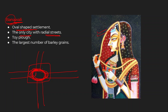Banwali is the only city with radial streets — just as in Part 1, Kalibangan was the only city where evidence of worship of the mother goddess was not found. This Bani Thani lady sat in her oval settlement at the center of the radial streets to keep an eye on all activities. She also had a toy plow — she was fond of playing with toys. And the largest number of barley grains were found here. So Banwali: oval-shaped settlement, only city with radial streets, toy plow, and largest number of barley grains.